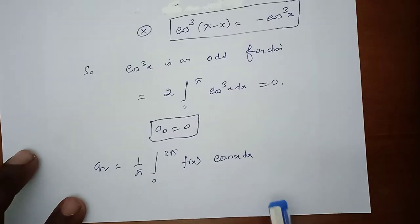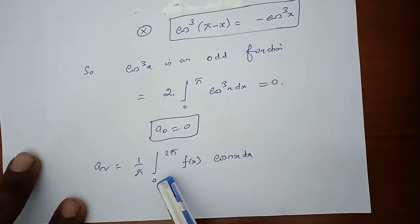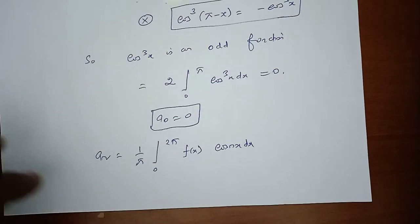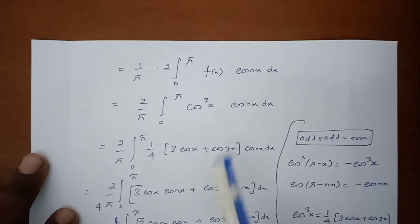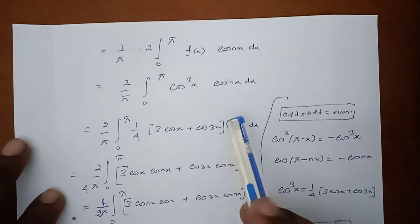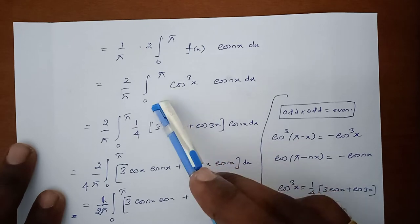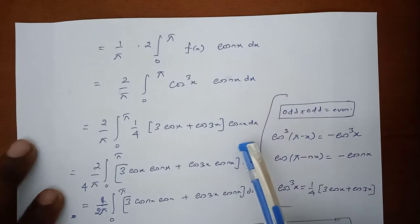Similarly, applying the aₙ formula: aₙ = 1/π × integral from 0 to 2π of f(x)·cos(nx) dx. This becomes 1/π × 2 times the integral from 0 to π of f(x)·cos(nx) dx, which equals 2/π × integral from 0 to π of cos³x·cos(nx) dx.